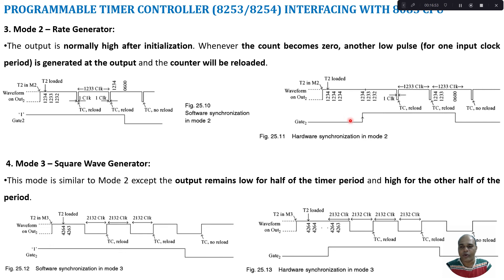Another case of Mode 2: when a value is loaded onto the timer, out goes high. If the gate signal is 0, down counting will not take place. Whenever a valid gate signal is present, down counting starts automatically. When the count value reaches 0, a low signal of one clock pulse duration is generated and the value is reloaded to the counter register.